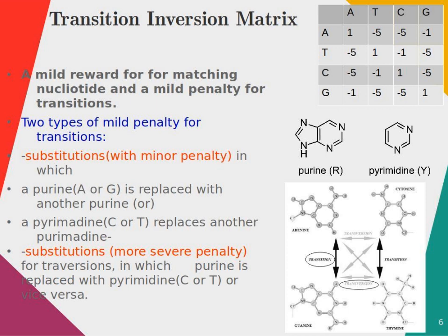During a transition, a purine is replaced with another purine, or a pyrimidine is replaced with another pyrimidine. Whereas in a transversion, a purine is replaced with a pyrimidine, or a pyrimidine is replaced with a purine.